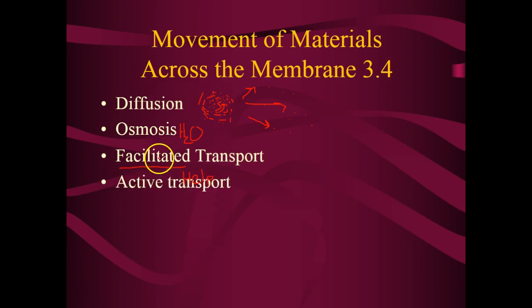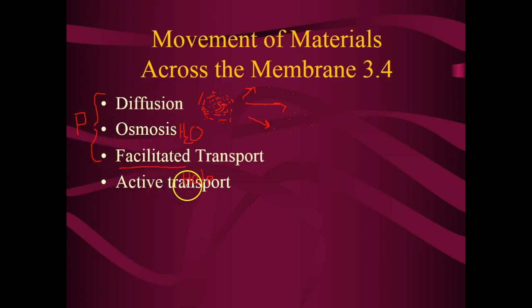Facilitated transport is the other form. These three — diffusion, osmosis, and facilitated transport — can be linked together, and all three are examples of passive transport. They all don't require energy. Active transport does require energy, in the form of ATP — adenosine triphosphate. We'll talk about ATP numerous times throughout the year and really get into what it is in the next two chapters.